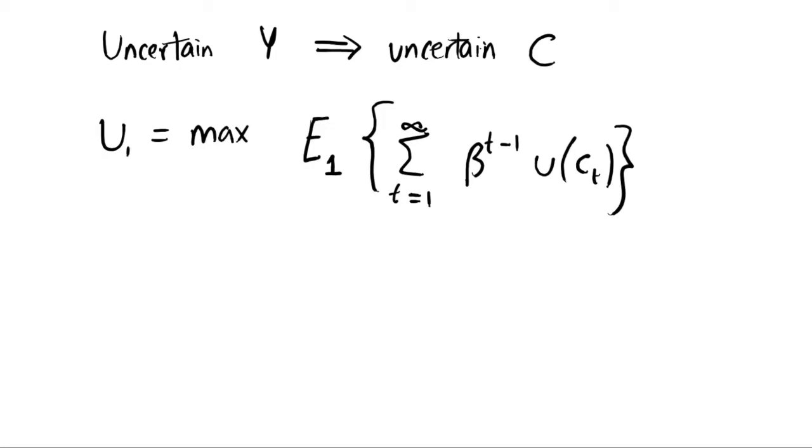So what we need to maximize with respect to is our intertemporal budget constraint. I'll write the intertemporal budget constraint IBC, but we do not have to change this. We're just maximizing an uncertain level of consumption, but our intertemporal budget constraint stays the same as what we had before.